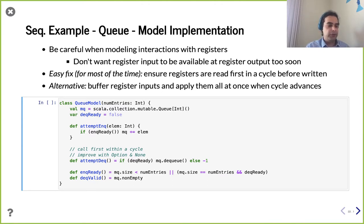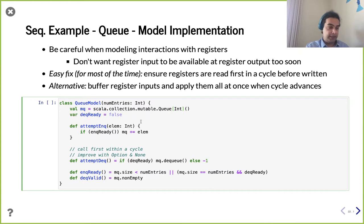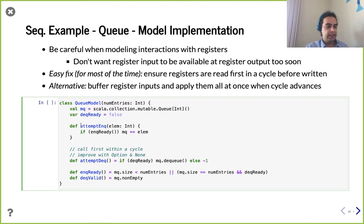For the queue model, we're going to go mutable and use a mutable Scala collection for the queue itself. We also need to mimic the decoupled behavior, with ready and valid for both enqueue and dequeue. We'll initially say our dequeue is not ready to receive — using a var so people can overwrite this. When we want to enqueue something, we check if we're ready; if so, we add it to our queue. If not, the transaction doesn't happen on the decoupled interface.